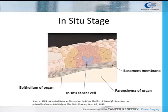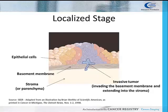In situ means "in place." In situ is the presence of malignant cells that do not penetrate the basement membrane of the tissue and has no stromal invasion. The stroma is the connective tissue of an organ, gland, or other structure. A localized cancer is a malignancy limited to the organ of origin. It has spread no farther than the organ in which it started. There is invasion past the basement membrane of the epithelium into the functional part of the organ, but there is no spread beyond the boundaries of the organ.